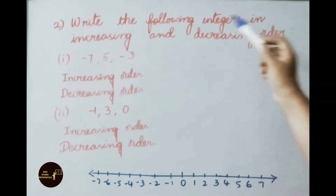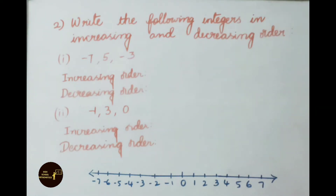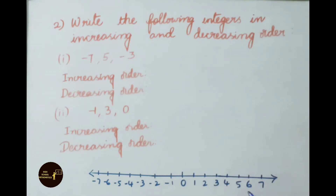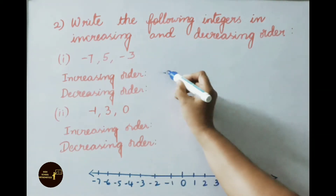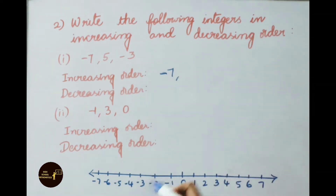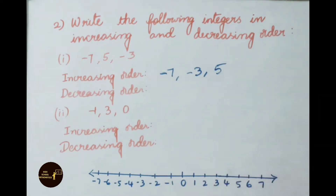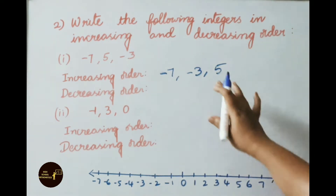Question 2: Write the following integers in increasing and decreasing order. Increasing order means arranging the numbers in ascending order, from small to big. Observe the number line so that we can arrange the numbers easily. For minus 7, 5, and minus 3 — observing the number line from left to right, we first get minus 7, then minus 3, then 5. So this is the increasing order.